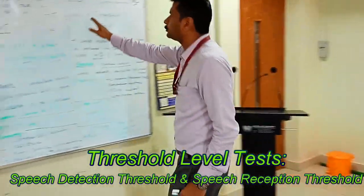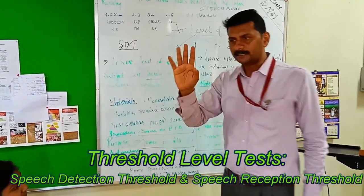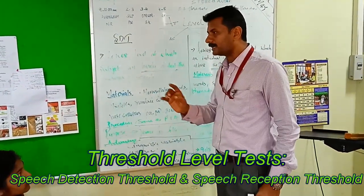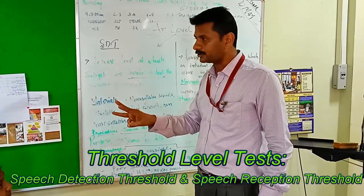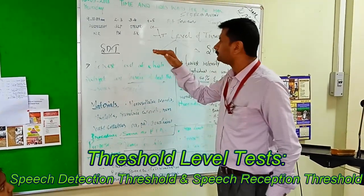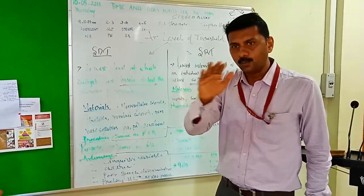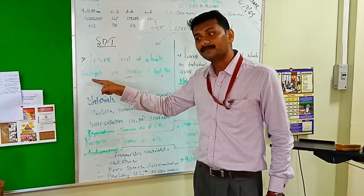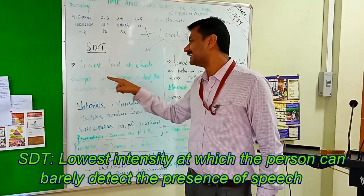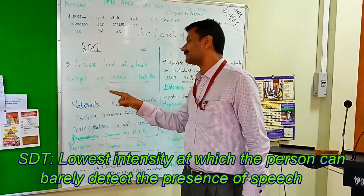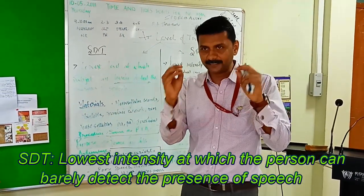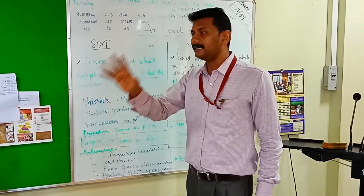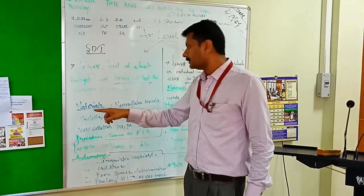The two tests are SDT — Speech Detection Threshold — and SRT, also known as Speech Reception Threshold. SDT is detection, which means the lowest level at which the person — the subject — can barely detect the presence of speech. We are using a speech stimulus and the person says 'yes, I can detect it.' They need not respond verbally.